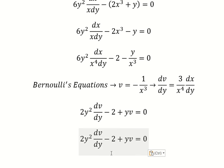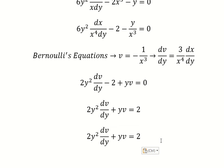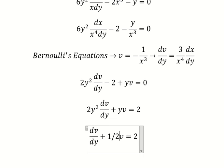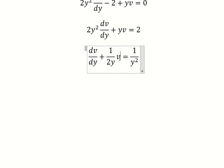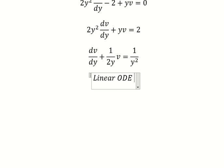Now I will move negative two to the right side. Then we divide both sides by this one. So we have v and the first derivative of v. This is about a linear ordinary differential equation.